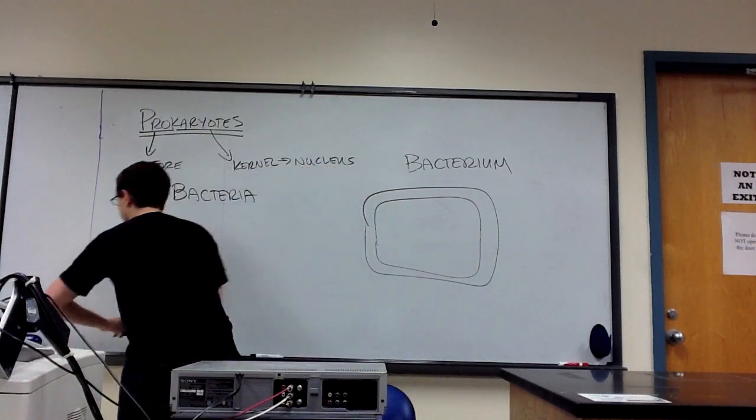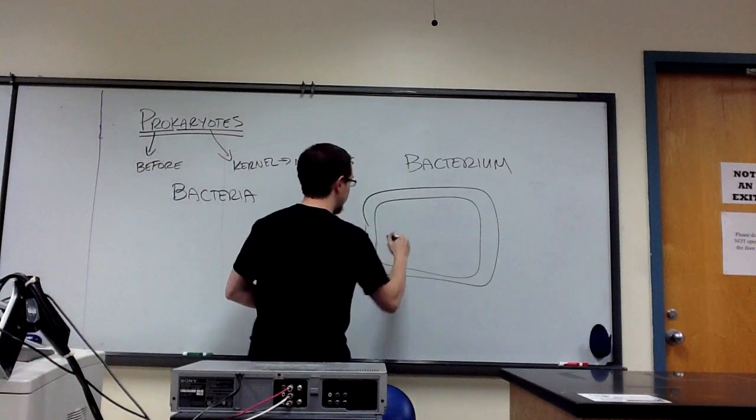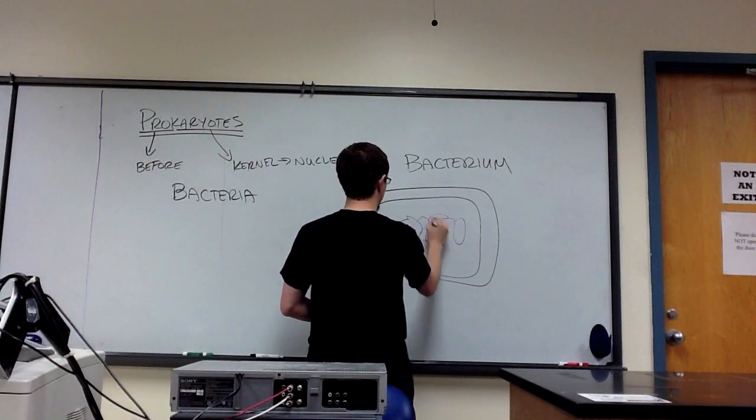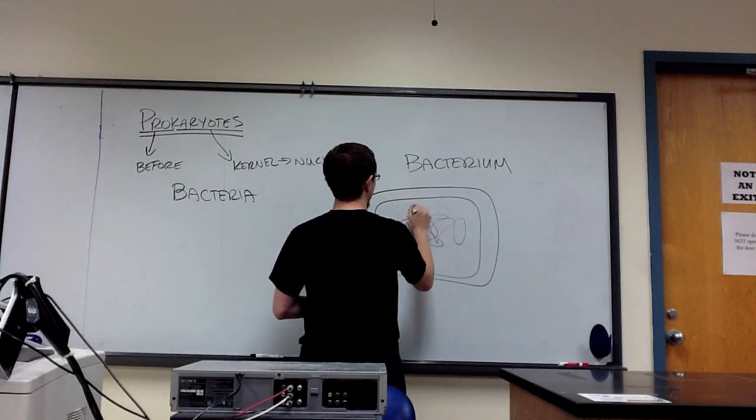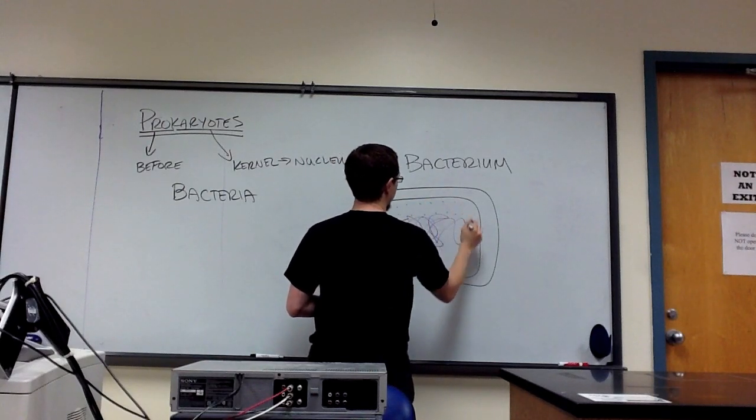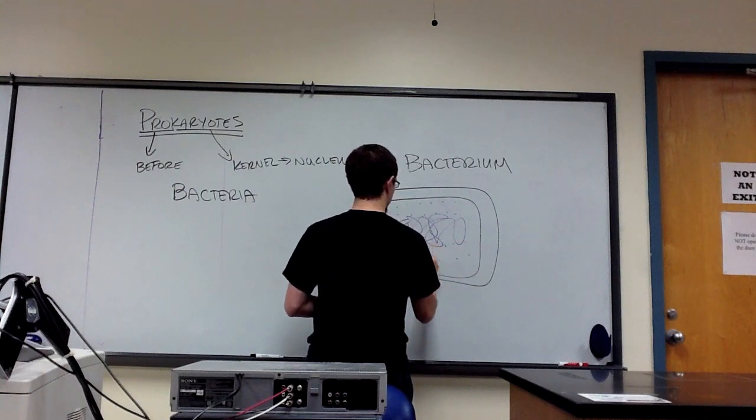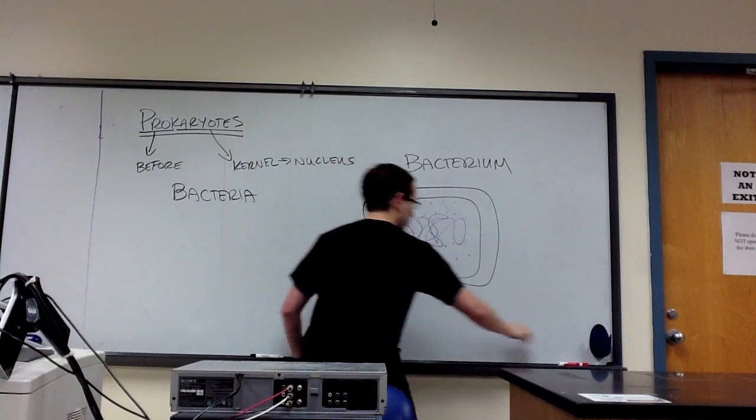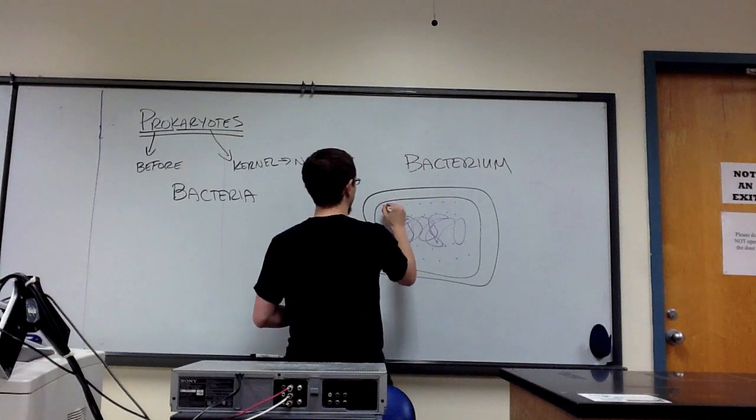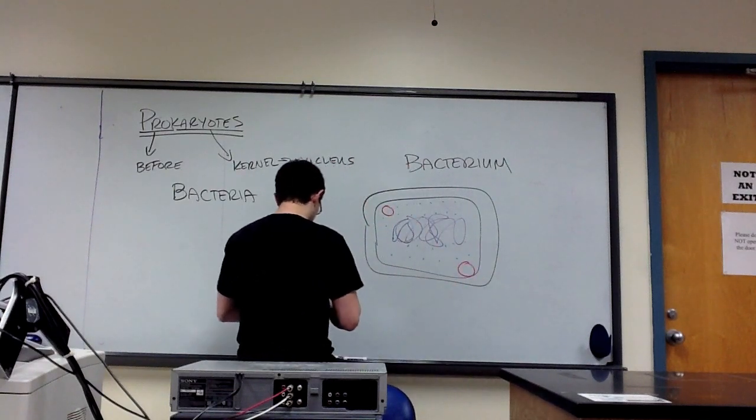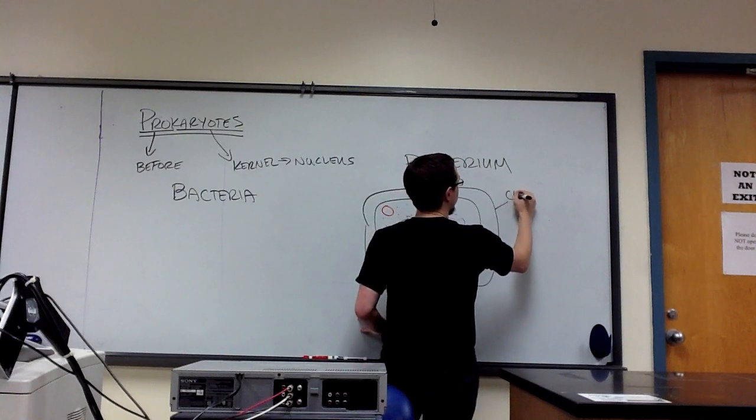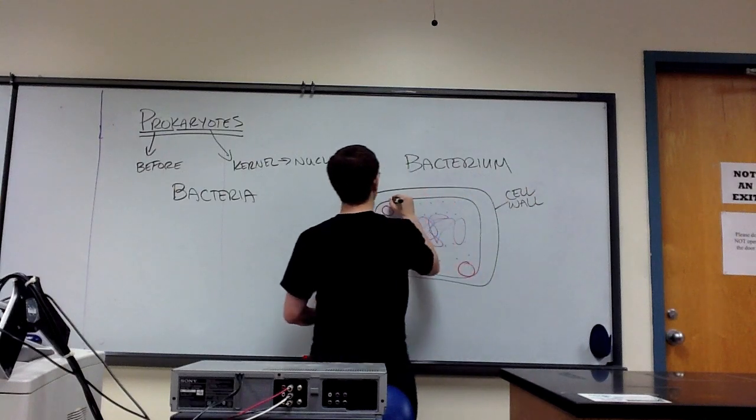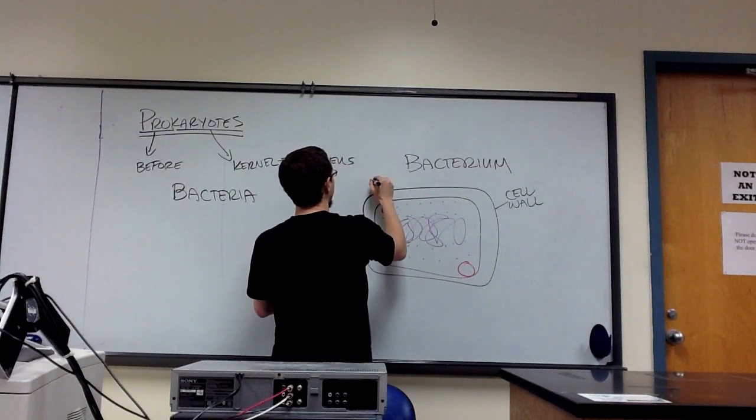Okay, and then I'll draw a couple of structures on the inside. The outermost structure on this particular bacterium is called a cell wall. Inside that, you're going to have a plasma membrane.